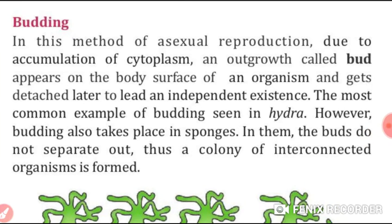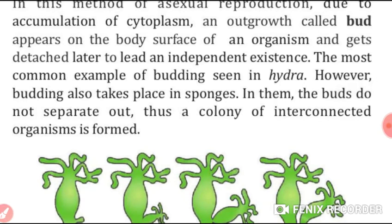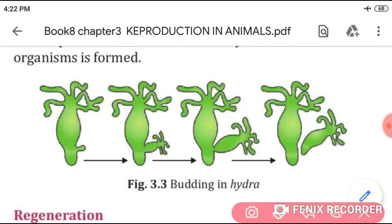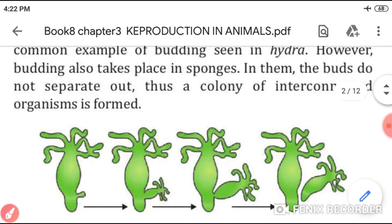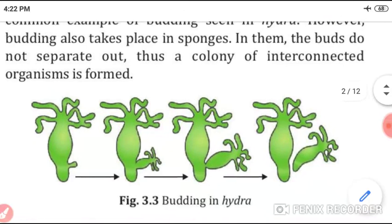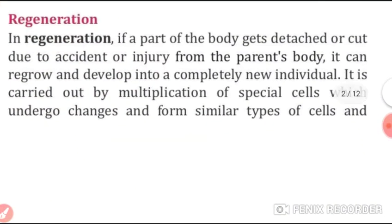Now, budding. In this method of asexual reproduction, due to accumulation of cytoplasm, an outgrowth appears — that outgrowth is known as a bud. It gets detached later to lead an independent existence. This happens in hydra — the outgrowth detaches from the parent and lives independently. Budding also takes place in sponges.